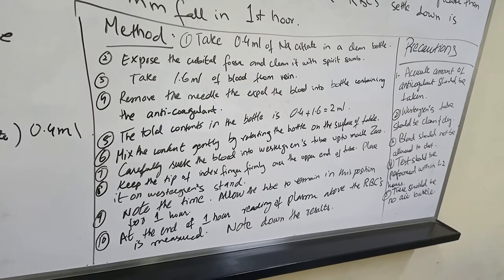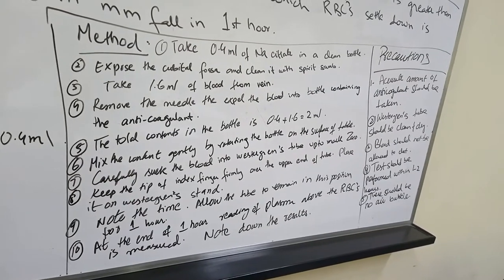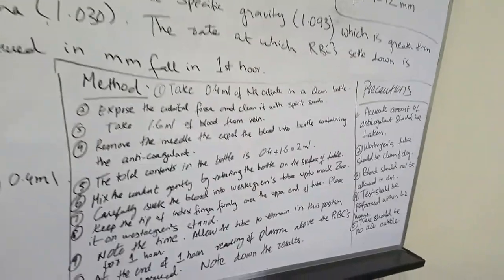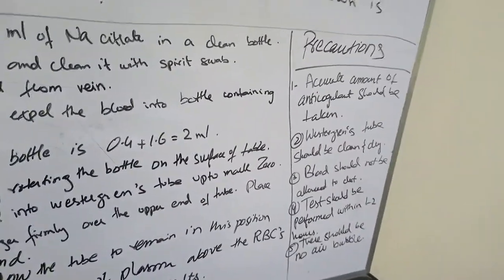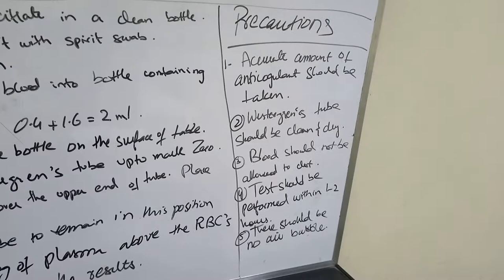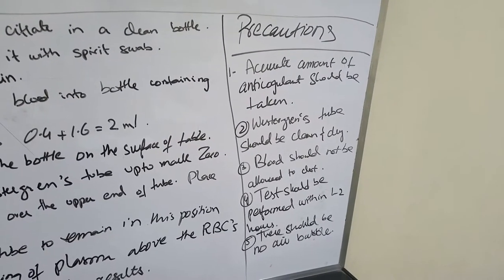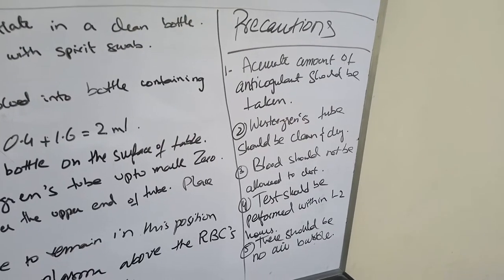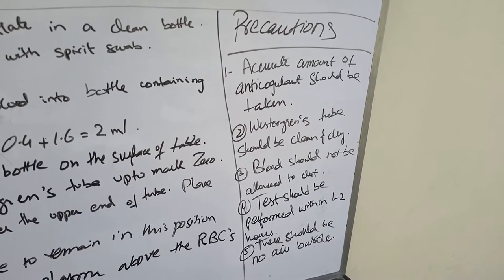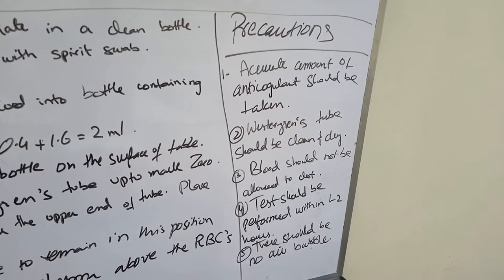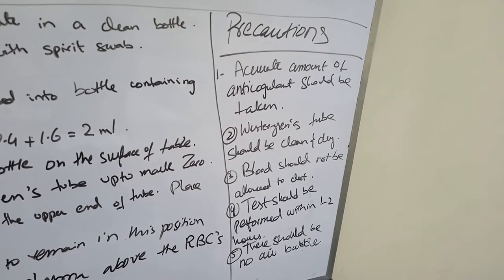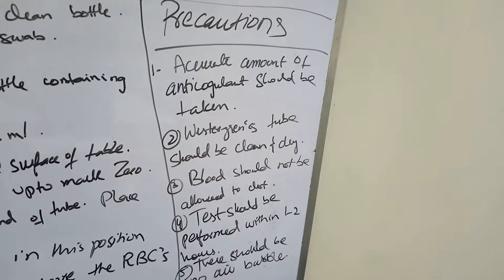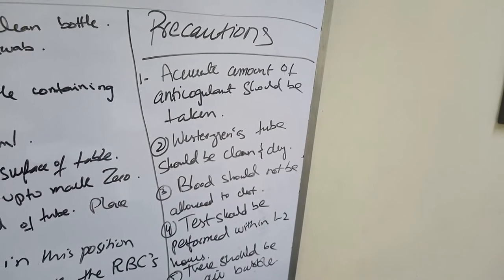The precautions are: an accurate amount of anticoagulant should be taken; the Westergren tube should be dry and clean; blood should not be allowed to clot; the test should be performed within 2 to 3 hours after the withdrawal of blood; there should be no air bubbles in the ESR tube, as these will give a false result; and lastly, the reading must be taken exactly after 1 hour.